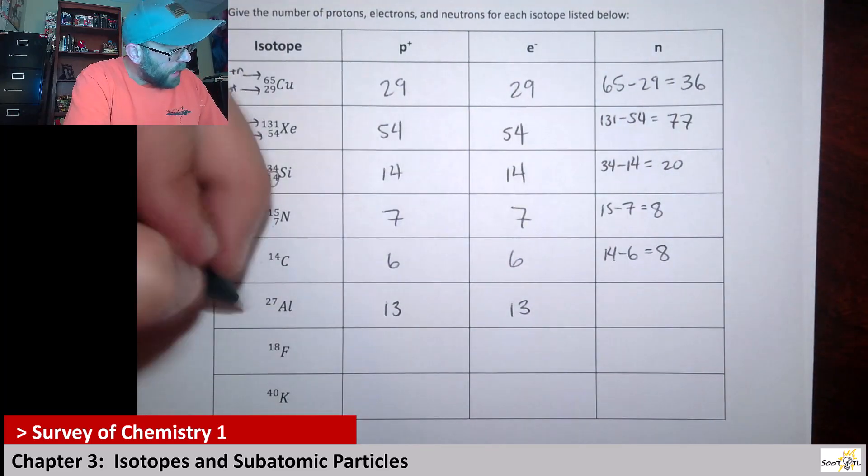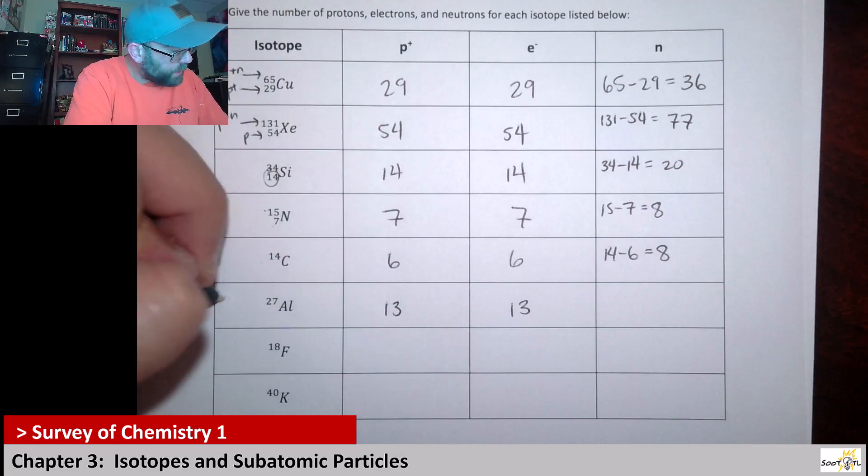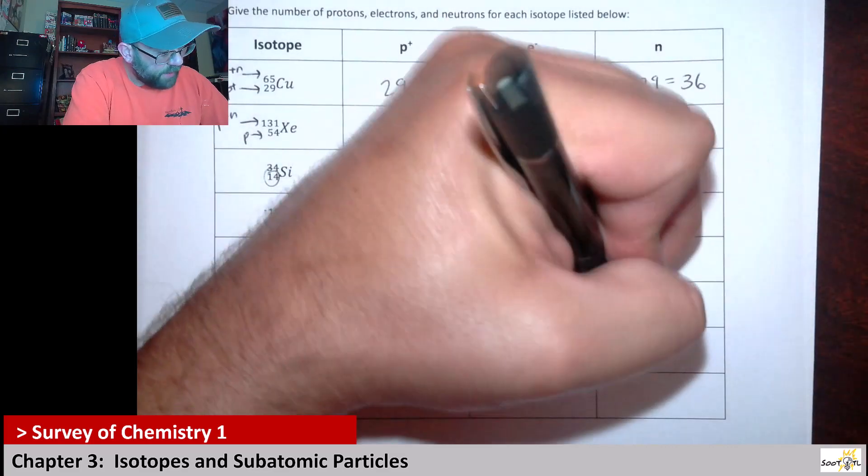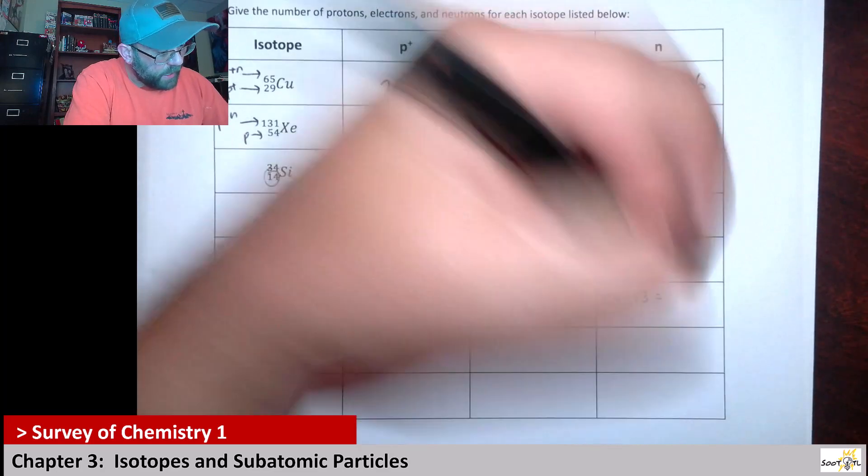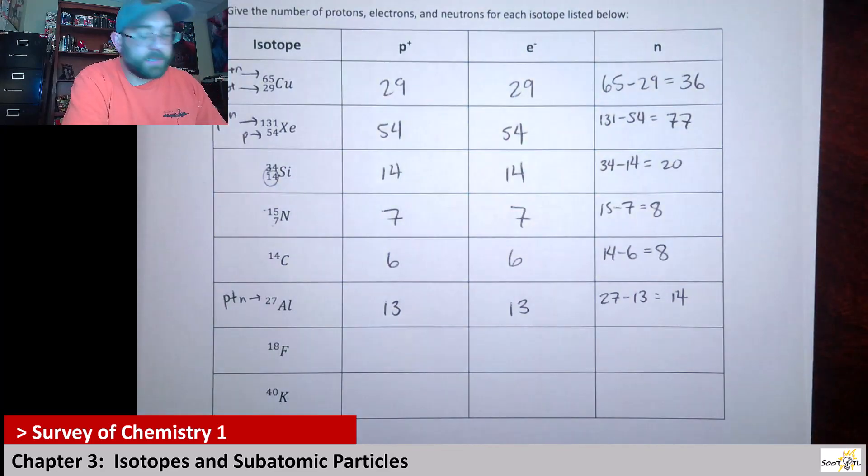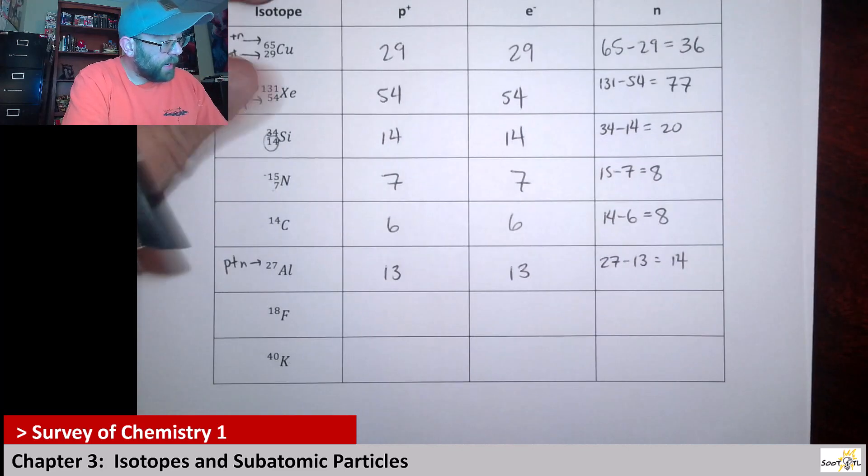And then now we see that this number up top, which is protons plus neutrons, I just need to say 27 minus 13, that should give me 14. So this aluminum has 14 neutrons.